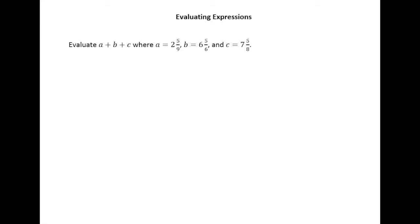So we want to evaluate a plus b plus c, where a equals 2 and 5 ninths, b equals 6 and 5 sixths, and c equals 7 and 5 eighths. We'll just write out the addition problem that we get first of all.